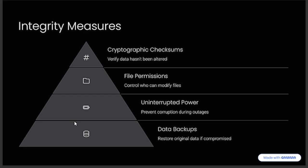Standard measures to guarantee integrity include: cryptographic checksums to verify data hasn't been altered; file permissions to control who can modify files; uninterrupted power supply to prevent corruption during outages; and data backups to restore original data if it is compromised.